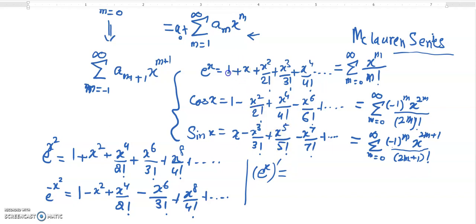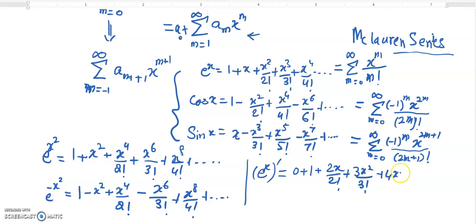What will it be? The constant term (a naught) will be 0, x will become 1, and then it will be 2x over 2 factorial, plus 3x squared over 3 factorial, plus 4x cubed over 4 factorial, and so on.